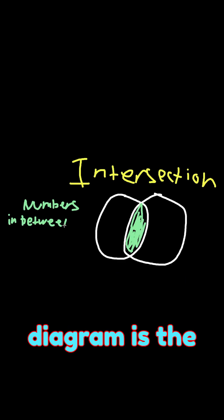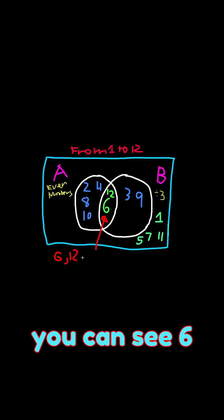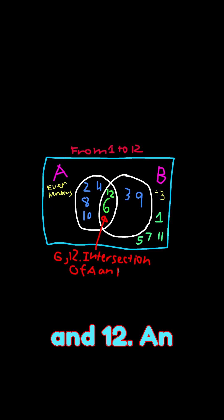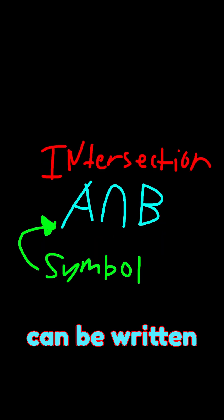An intersection in a Venn diagram is the numbers in both sets, as you can see, 6 and 12. An intersection can be written as this.